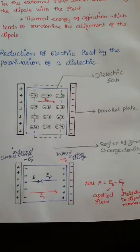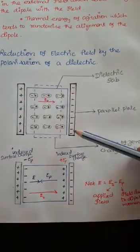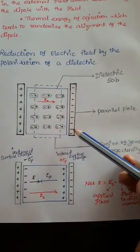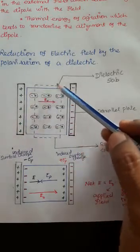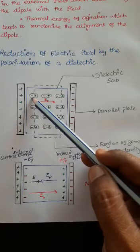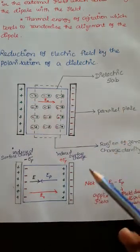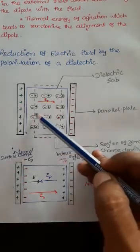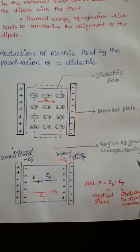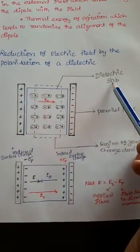Due to that property we are examining this diagram. Here I have placed two parallel plates which are parallel to each other — one with positive charge and one with negative charge — and I have placed one dielectric slab between these two parallel plates. I have marked the negative and positive charges, and the dotted line indicates the region of zero charge density, which I will explain shortly.